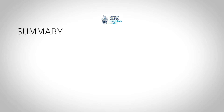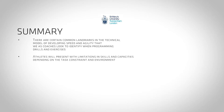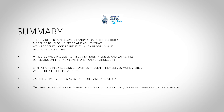To summarise, it is important to understand that athletes will present with limitations in skills and capacities depending on the task constraint and environment. There are certain common landmarks in the technical model of developing speed and agility that coaches look to identify when programming drills and exercises, and limitations in skills and capacities present themselves more visibly when the athlete is fatigued. Even though key issues with skills and capacities have been addressed throughout the vlog, many of the issues noted can seldom be looked at in isolation, as capacity limitations may impact skill and vice versa. As we look to guide athletes towards an optimal technical model, we need to understand and take into account the unique nature of each athlete and corresponding coaching cues that will help athletes get into better positions and solve movement tasks in the most efficient manner possible.